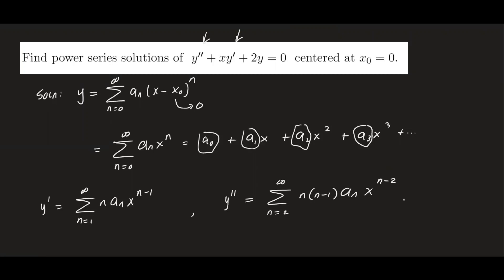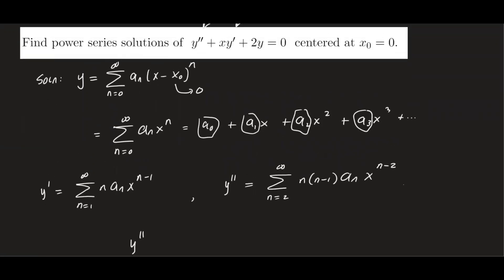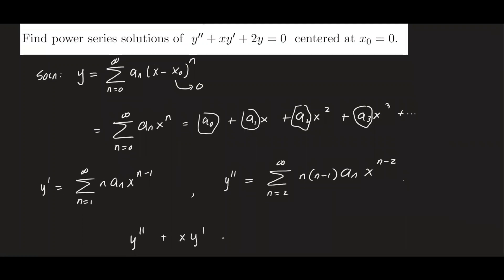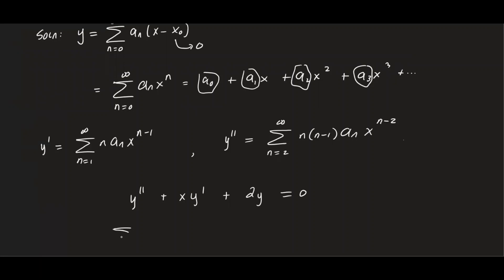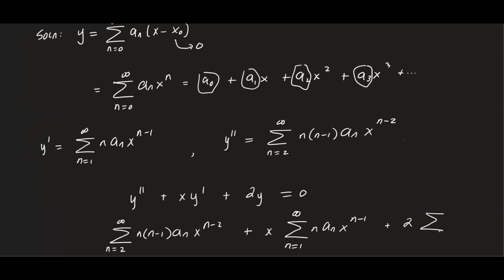Now we plug these into our given differential equation: y double prime plus x y prime plus 2y equals zero. The first term is the sum from n equals two to infinity of n(n−1)aₙ x to the n minus two. Plus x times the first derivative gives the sum from n equals one to infinity of n aₙ x to the n minus one. And the last term, 2y, gives the sum from n equals zero to infinity of aₙ x to the n, all equal to zero.